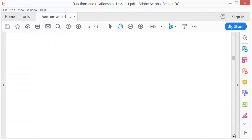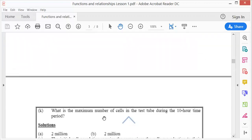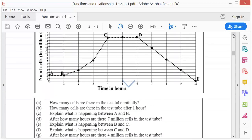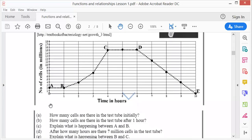Next question: what is the maximum number of cells in the test tube during the 10-hour time period? Maximum during 10 hours? Let's see. Right, so from there to there, it's 10 hours. So maximum is there, isn't it? Between C and D. So the maximum will be 15 million.